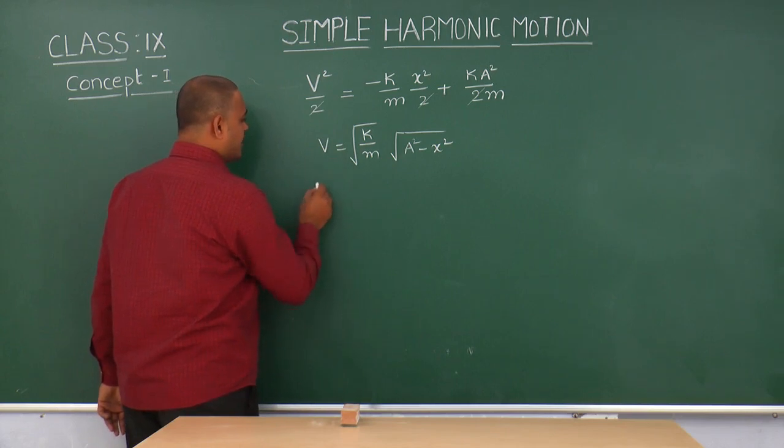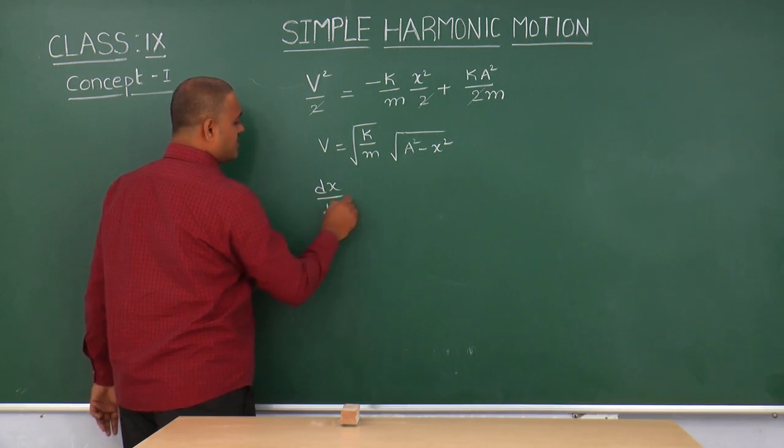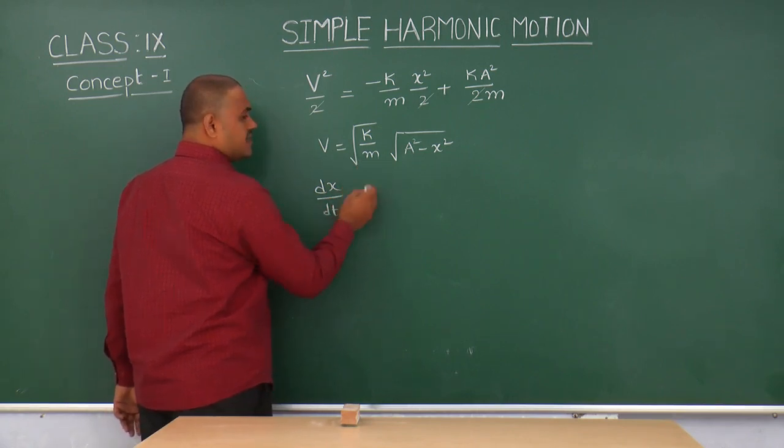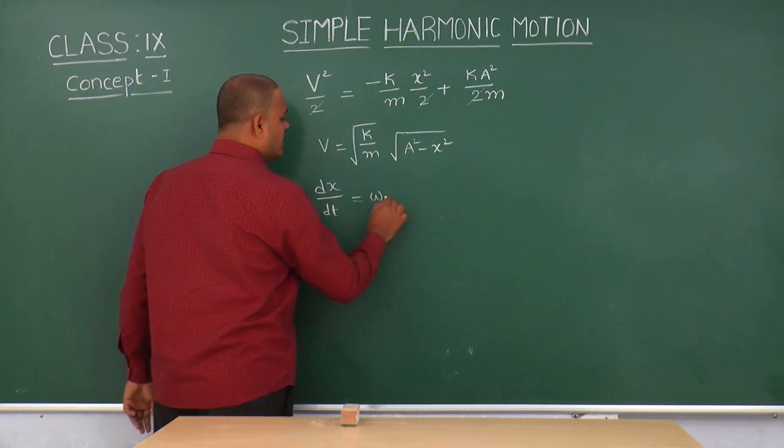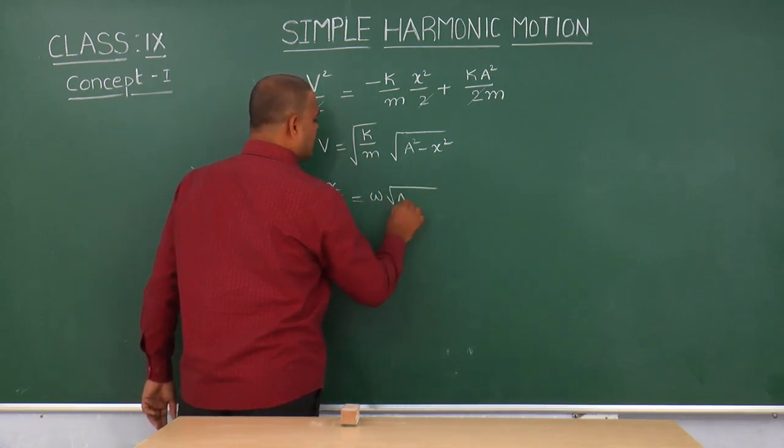So this can be written as v means, according to kinematics, dx by dt is equal to this term called omega under root a square minus x square.